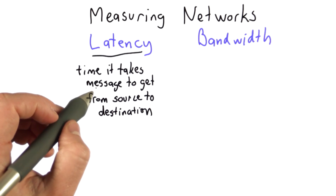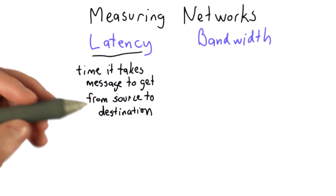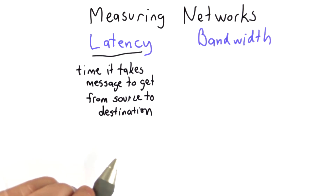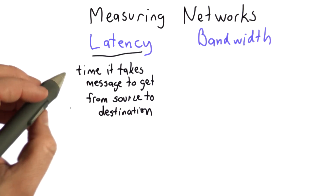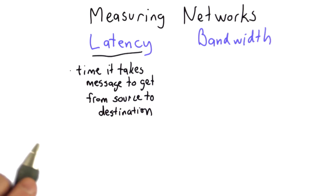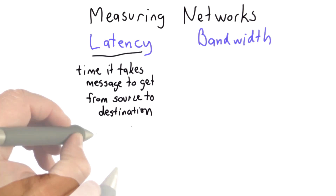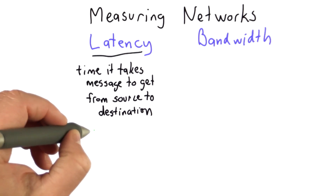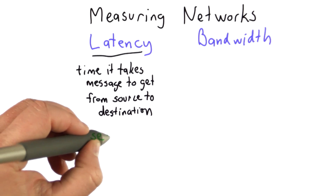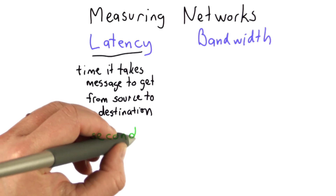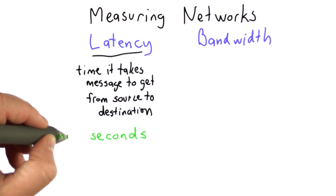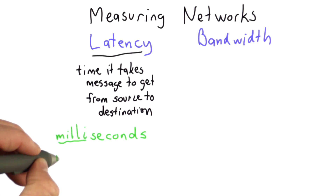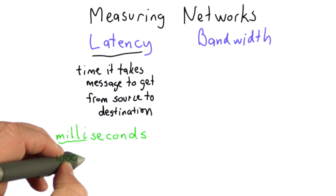Latency is the time that it takes for a message to get from the source to the destination — specifically for the start of the message. We can measure latency by timing from when you start sending to the time that the receiver starts receiving. This is a unit of time, measured in something like seconds. For a fast network today, it's more often measured in milliseconds, and there are 1,000 milliseconds in one second.